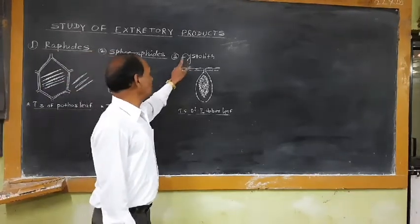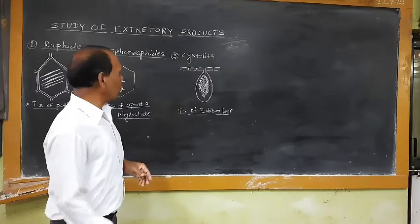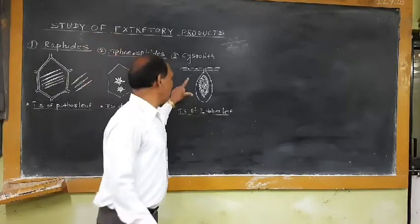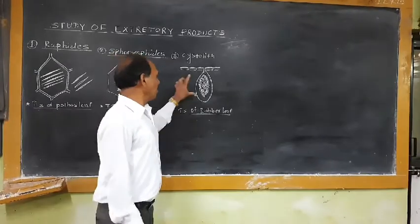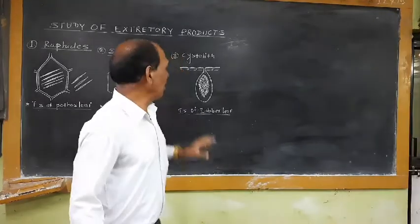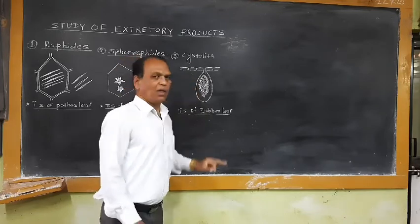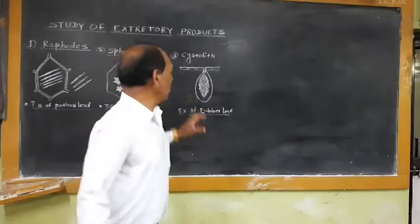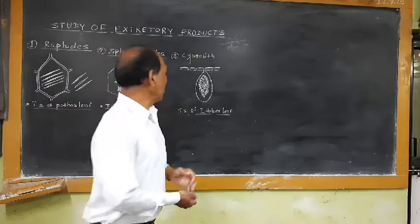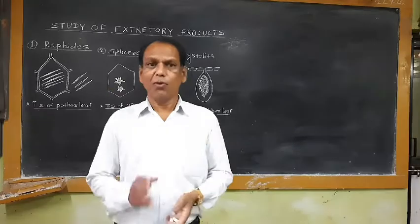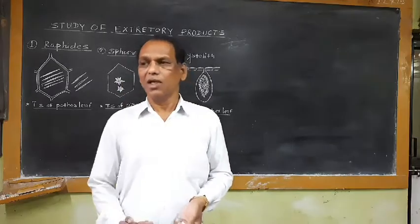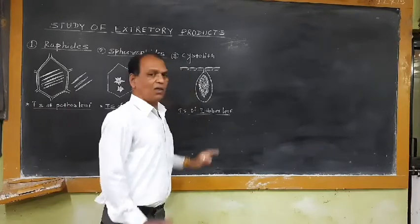The third type of waste compounds which are produced and stored inside the cells are studied under the heading of cystoliths. Cystoliths are calcium carbonate crystals. They are looking like bunches of grapes. For example, if we take the transverse section of rubber leaf and observe under microscope, the cystolith is observed in between palisade tissue and spongy tissue. That means a separate space is created due to disintegration of some cells, and in this space the calcium carbonate is deposited in the form of bunch of grapes. Such type of calcium carbonate crystals which are observed in the form of bunch of grapes are commonly called cystoliths.